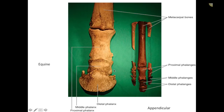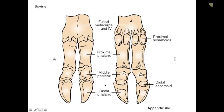On a horse, P1, P2, and P3 — proximal, middle, and distal phalanx — are also called the long pastern bone, short pastern bone, and coffin bone. This is cow: they have two digits, fused metacarpal bones three and four, and three phalanges per digit. This picture illustrates the proximal sesamoid bones and distal sesamoid bones in both horse and cow.